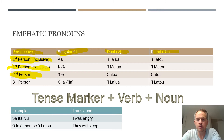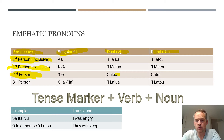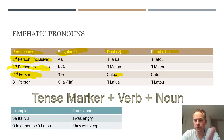For second person: singular is oe — the equivalent of 'you' in English. For dual, it's oulua. For plural, it's outou. You can see similarities in the dual, ending in 'ua.' If you know how to count in Samoan, the word for two is lua, so you can see that common ending in all the dual pronouns. In the plural outou, you'll notice the common T-O-U ending.